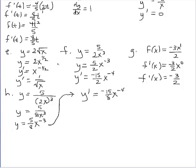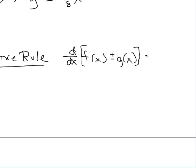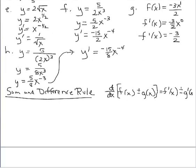Let's move on and look at the sum and difference rule. The sum and difference rule allows us to differentiate a function with multiple terms — terms are what you add or subtract. If we have two or more terms being added or subtracted and want to find the derivative, we bring in the derivative operator. What this looks like is term by term differentiation: the derivative of f plus or minus the derivative of g.